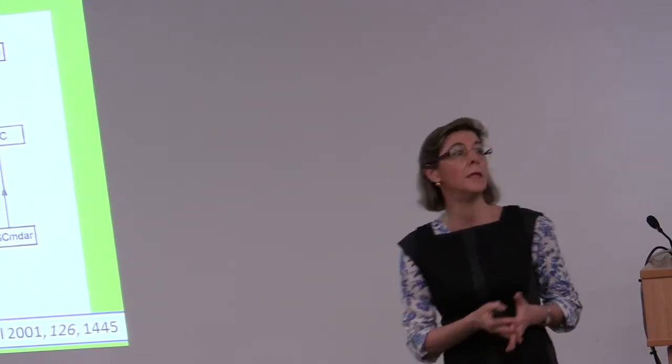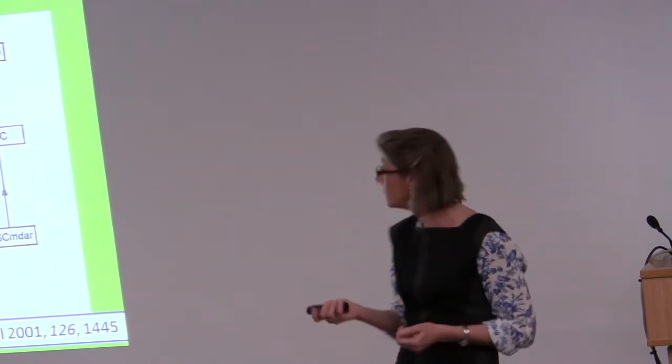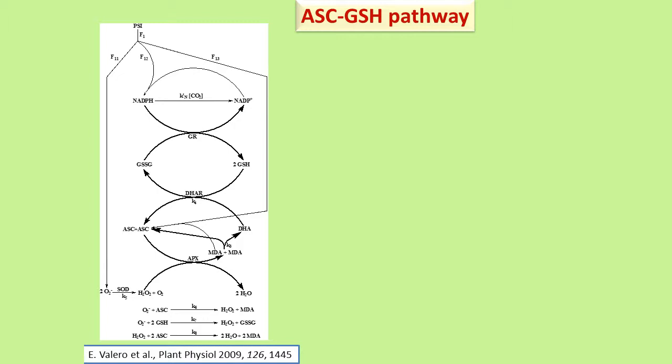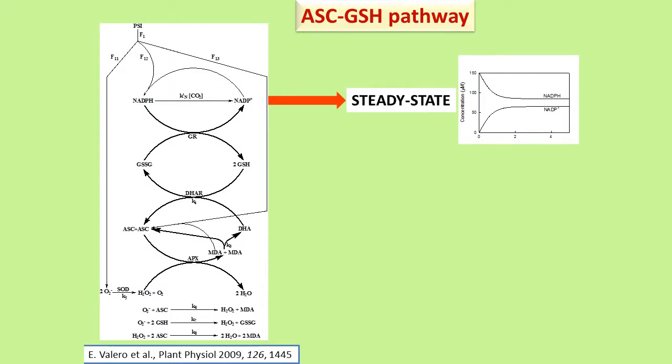This model has some weak points from the kinetic point of view, and therefore some years ago we decided to improve it. This is our first model, reported in 2009. It is similar to the previous one but clearer. It also includes a constant source of electrons divided among three branches: the photogeneration of superoxide radicals, the photoreduction of monodehydroascorbate radicals to ascorbate, and the photoreduction of NADP to NADPH. The enzymes included are glutathione reductase, monodehydroascorbate reductase, and ascorbate peroxidase. Under non-stress conditions, this model leads to steady-state solutions for the chemical species and enzymatic activities involved in the pathway.